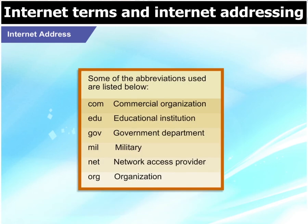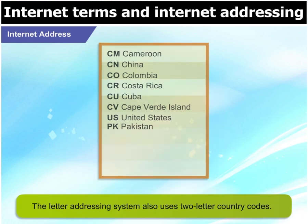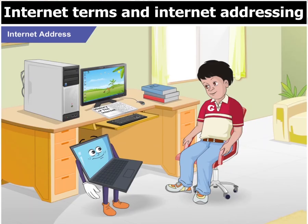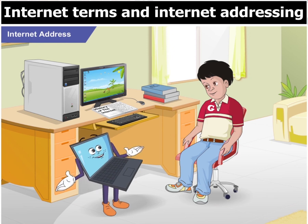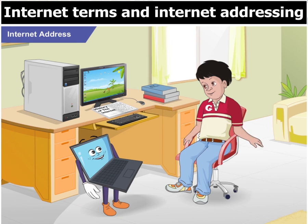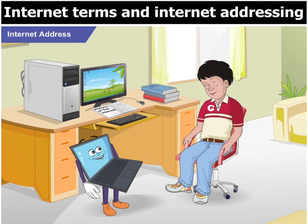These are some of the abbreviations used. The letter addressing system also uses two-letter country codes. For example, US stands for the United States, CN stands for China, and PK for Pakistan. So, is the internet much clearer now Goggle? Oh yes, very much so. Can't wait to learn some more.